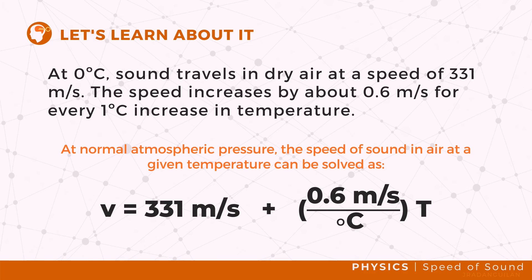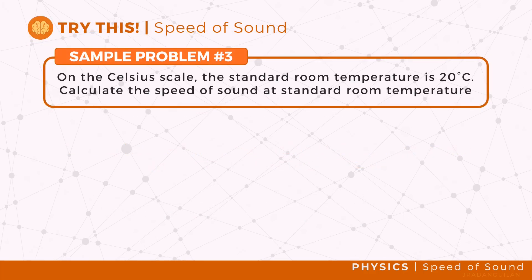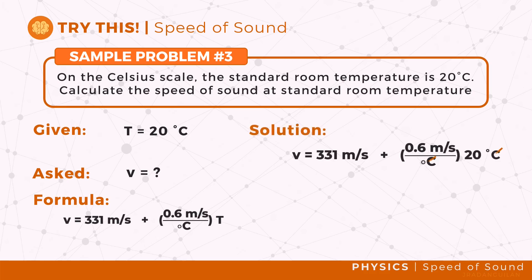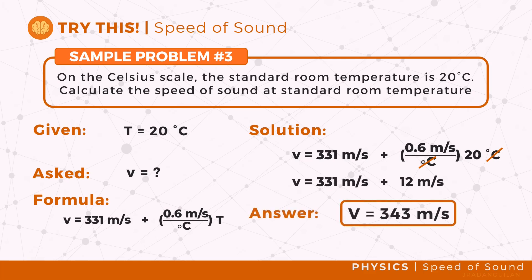Let's try this. Calculate the speed of sound at standard room temperature. On a Celsius scale, the standard room temperature is 20 degrees Celsius. Based on this, at 20 degrees Celsius, sound waves travel at around 344 meters per second. At this rate, molecules of air collide more often.